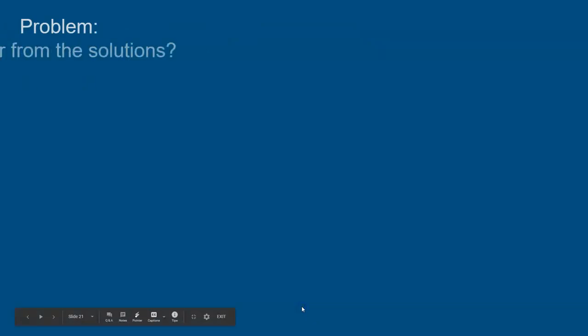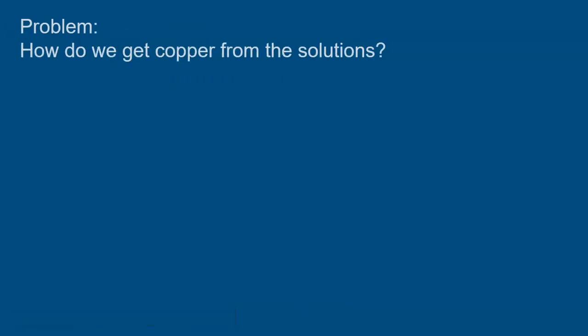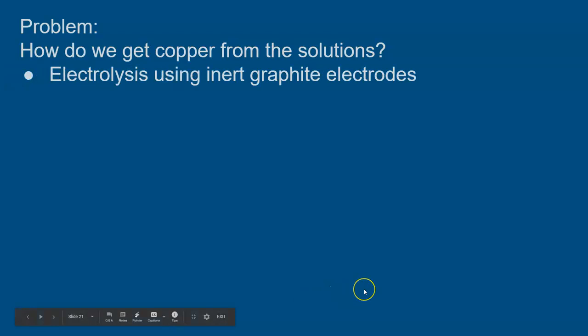The problem we have is how do we get copper from solutions? Now there are two ways in which you can do this that you've already come across. You can use electrolysis and if you go back and have a look at the electrolysis topic you can see that if you electrolyse a solution like copper sulfate the copper collects at the cathode. The copper ion Cu2+ gains two electrons to form a copper coating on the cathode.